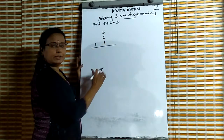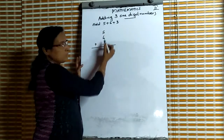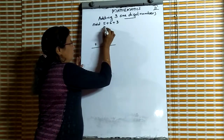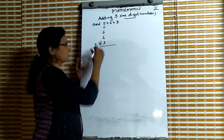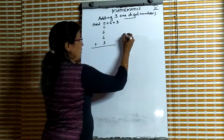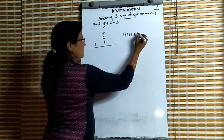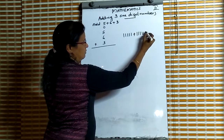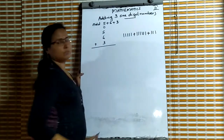Here all are one-digit numbers. All digits contain only one place — that is the ones place. Then we have to add these numbers. We add the digits in the ones place. 5 plus 6 plus 3. What is the total number?